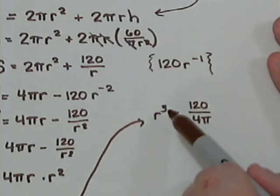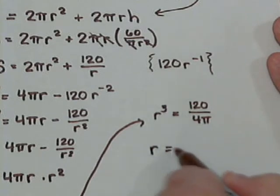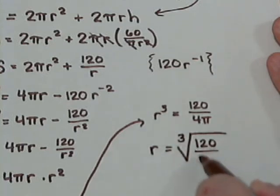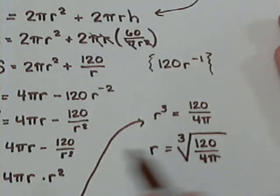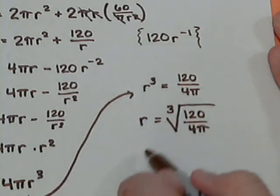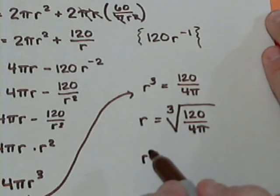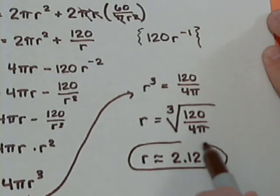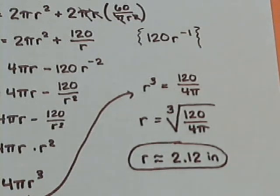Now, how do we get the r by itself? Well, if it's r to the third, the opposite would be the cube root. So what we need is the cube root of 120 over 4 pi. And most calculators should have a cube root button on it. So if we take the cube root of 120 over 4 pi, we get about 2.12. Since we're dealing with cubic inches at the beginning, this tells us in order to minimize the amount of material that we're going to use to make this can, we need to make a radius a little bit bigger than 2, about 2.12 inches. And that will minimize the surface area of the can and still hold our 60 cubic inches.